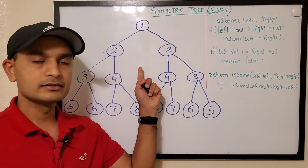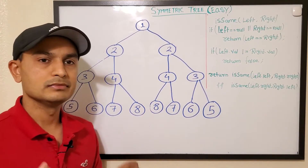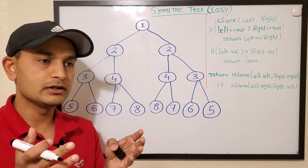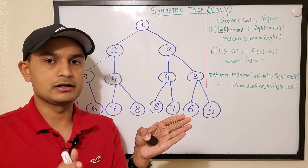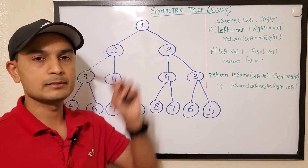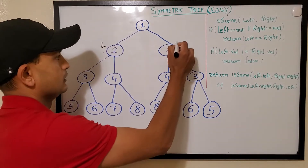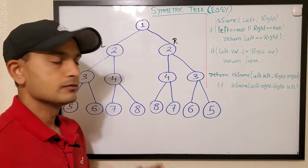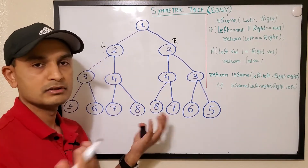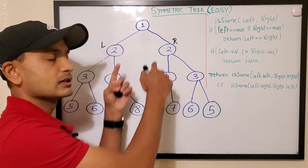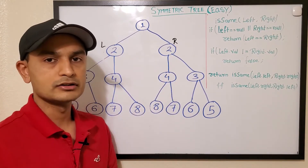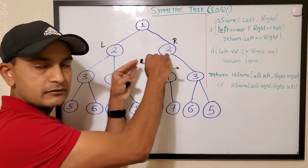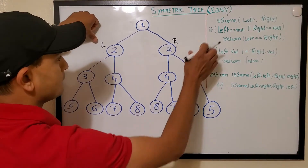We'll take this tree to run our algorithm on. For any binary tree we have a root node, so the only way to start is from the root node — go to left child and go to right child. Whether it's symmetric or not, we first check whether they are null. If either of them is null, it's not symmetric. Then we check the value — if the values of both nodes are not the same, it's not symmetric. In this case they both match, so till this level it's symmetric.